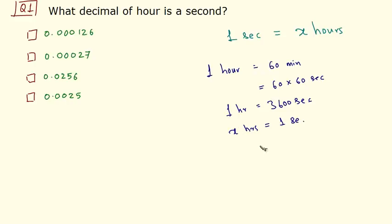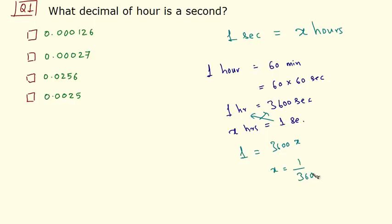So we have this comparison. We can cross multiply. So 1 is equal to 3600x, where x is the number of hours present in one second. So x equals 1 by 3600. You have to solve this fraction to get a decimal fraction. If you solve this you get the answer as 0.00027, and this is the right answer.